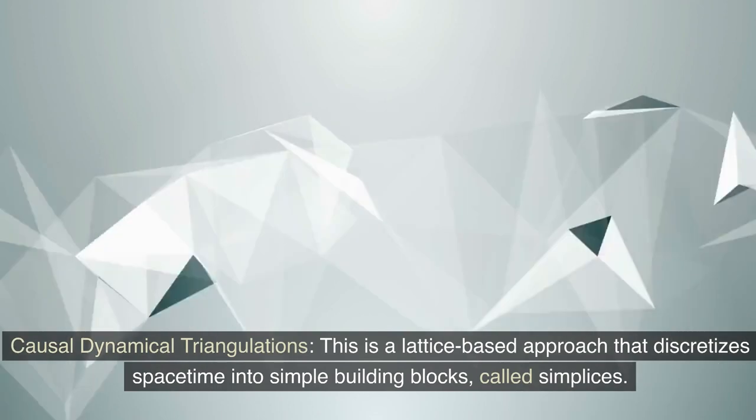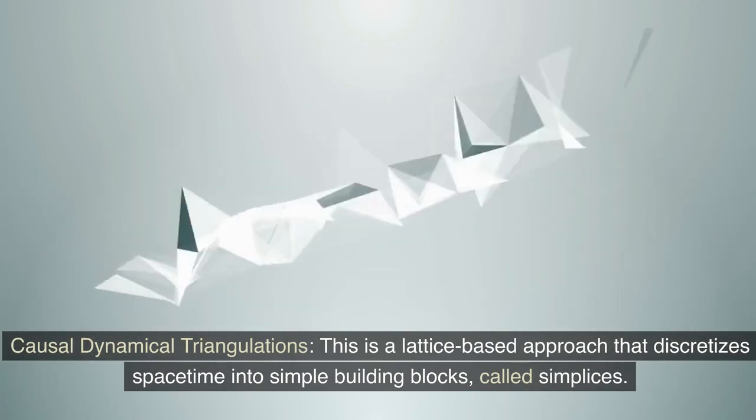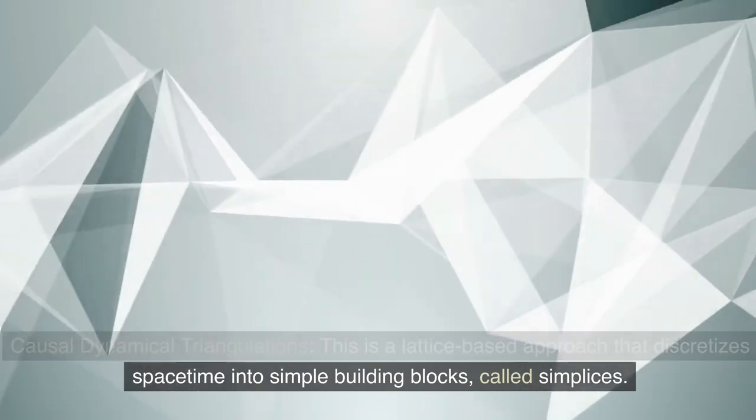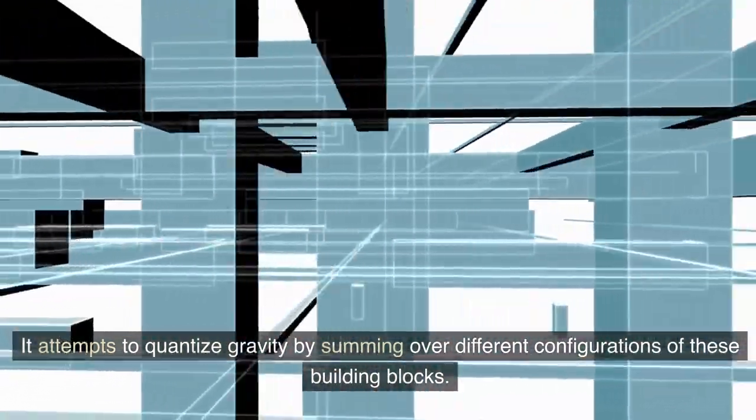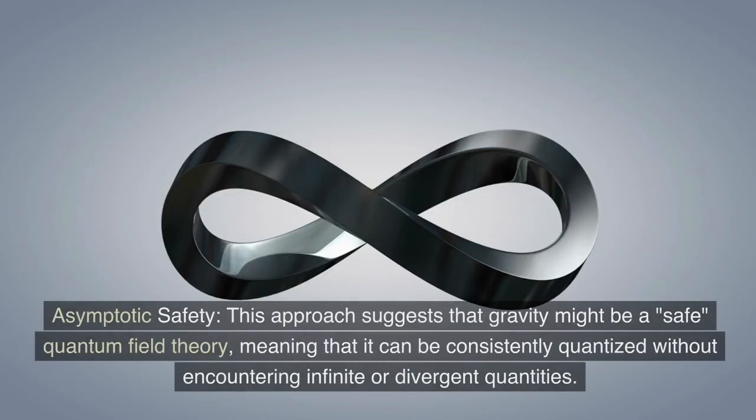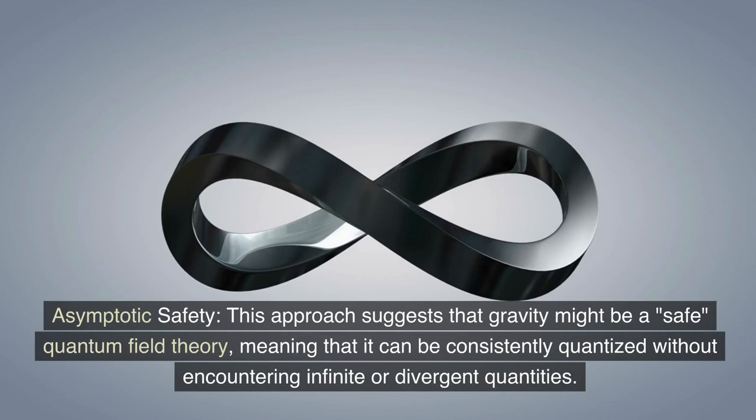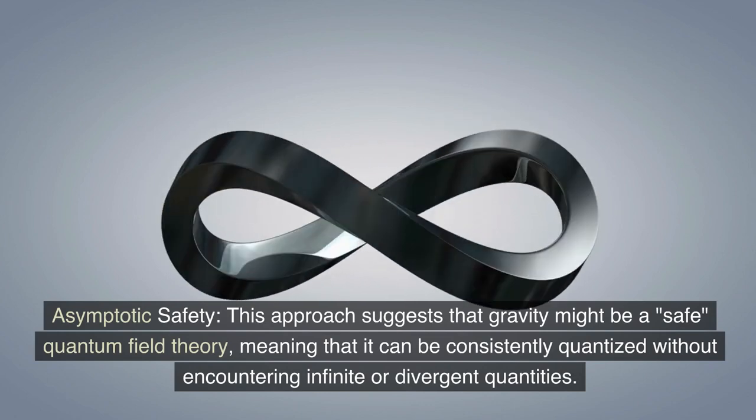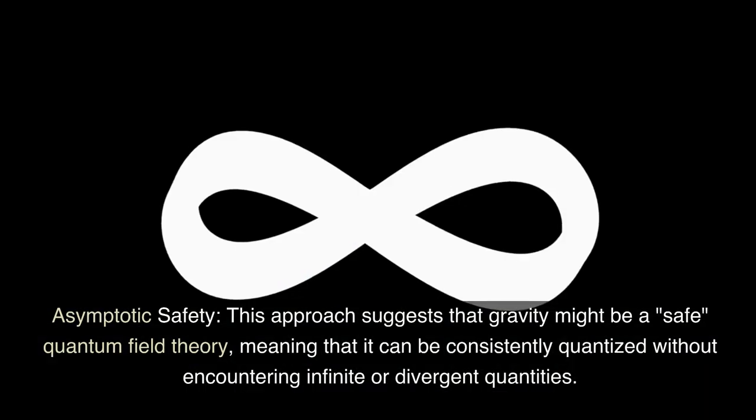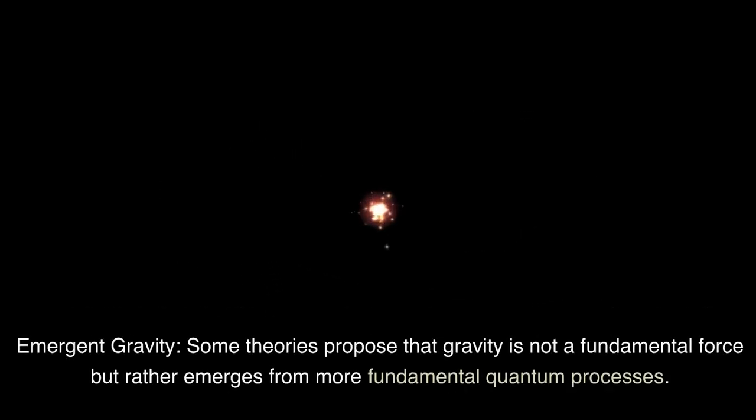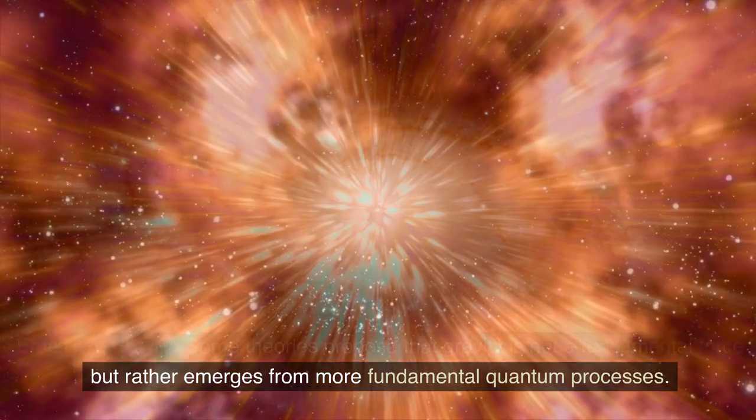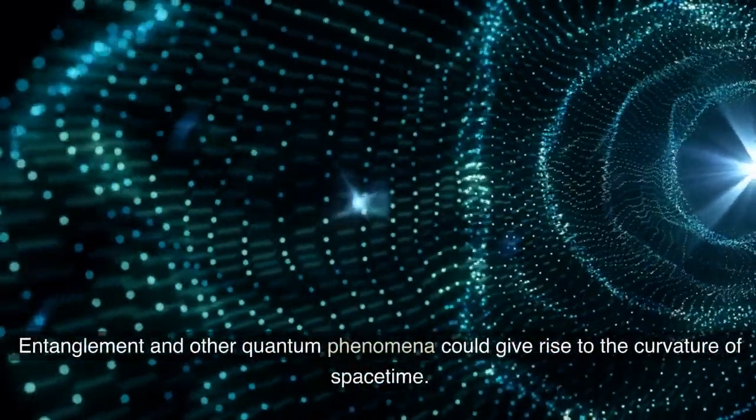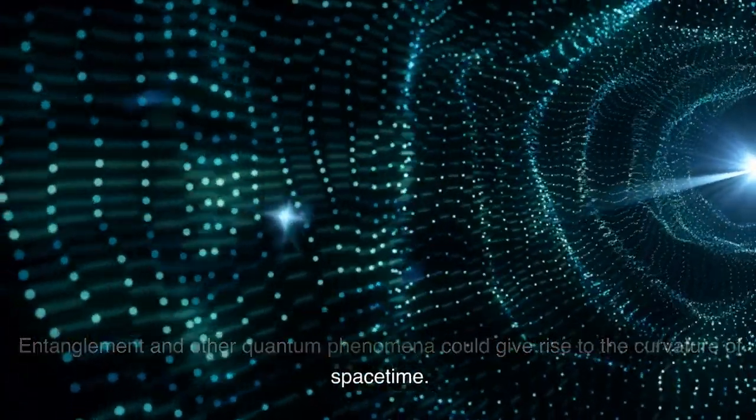Causal dynamical triangulations, this is a lattice-based approach that discretizes spacetime into simple building blocks called simplices. It attempts to quantize gravity by summing over different configurations of these building blocks. Asymptotic safety, this approach suggests that gravity might be a safe quantum field theory, meaning that it can be consistently quantized without encountering infinite or divergent quantities. Emergent gravity, some theories propose that gravity is not a fundamental force but rather emerges from more fundamental quantum processes. Entanglement and other quantum phenomena could give rise to the curvature of spacetime.